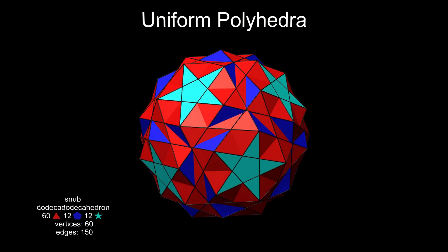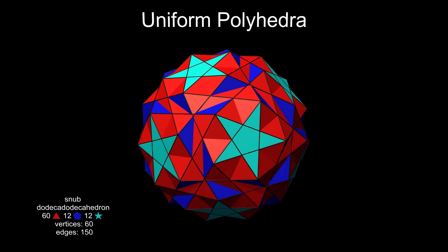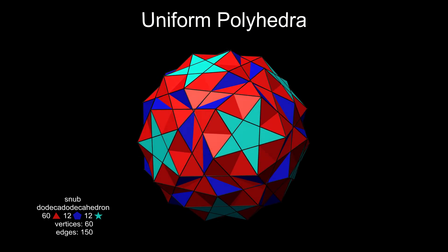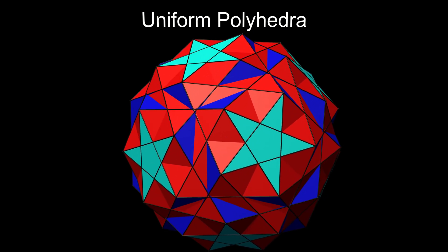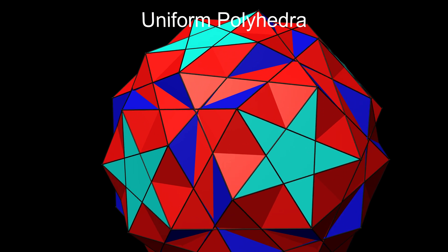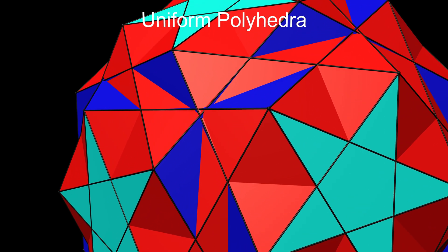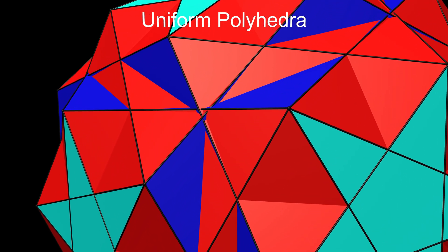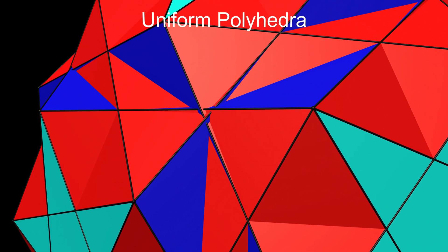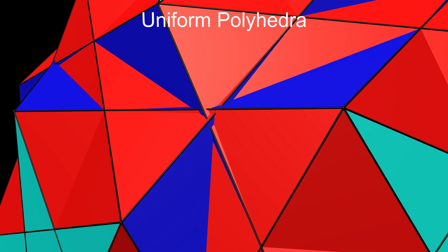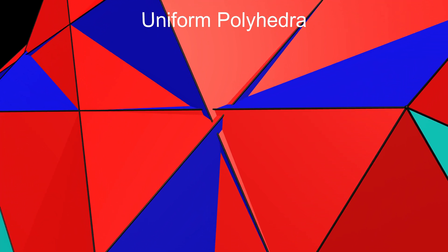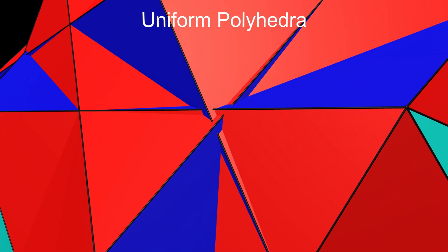Some of these non-convex snubs have quite an intricate structure. Zooming into this section, for example, shows a complicated area where three edges come close to each other but don't quite meet, resulting in a complicated intersection of three red faces and very thin slivers of red and blue.